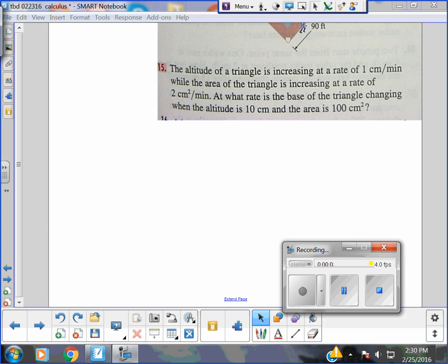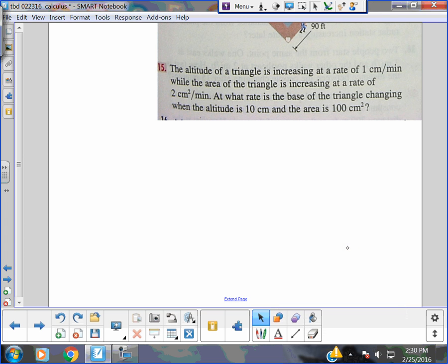So, related rates - the ones that will be on the test will always take some setup here. Here's one: The altitude of a triangle is increasing at a rate of 1 centimeter per minute, while the area of the triangle is increasing at a rate of 2 centimeters squared per minute. At what rate is the base of the triangle changing when the altitude is 10 and the area is 100?